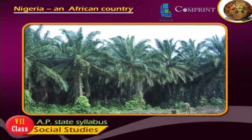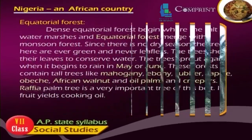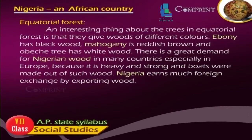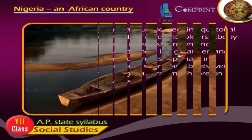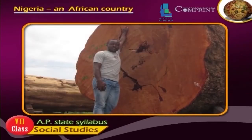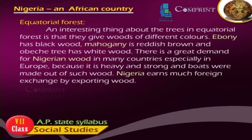The Raffia Palm Tree is a very important tree of this forest. Its fruit yields cooking oil. An interesting thing about the trees in equatorial forests is that they give woods of different colors — Ebony has black wood, Mahogany is reddish brown, and Obici tree has white wood. There is a great demand for Nigerian wood in many countries, especially in Europe, because it is heavy and strong. Nigeria earns much foreign exchange by exporting wood.